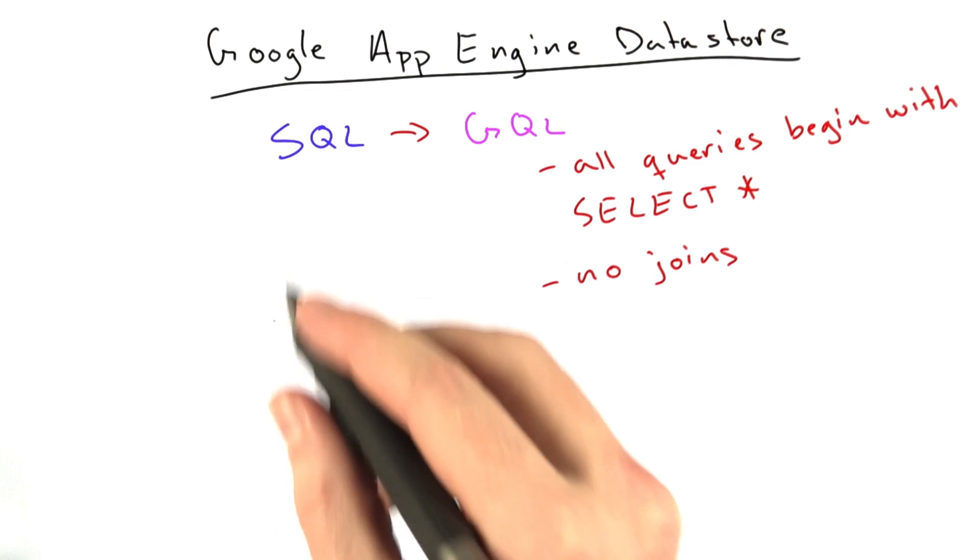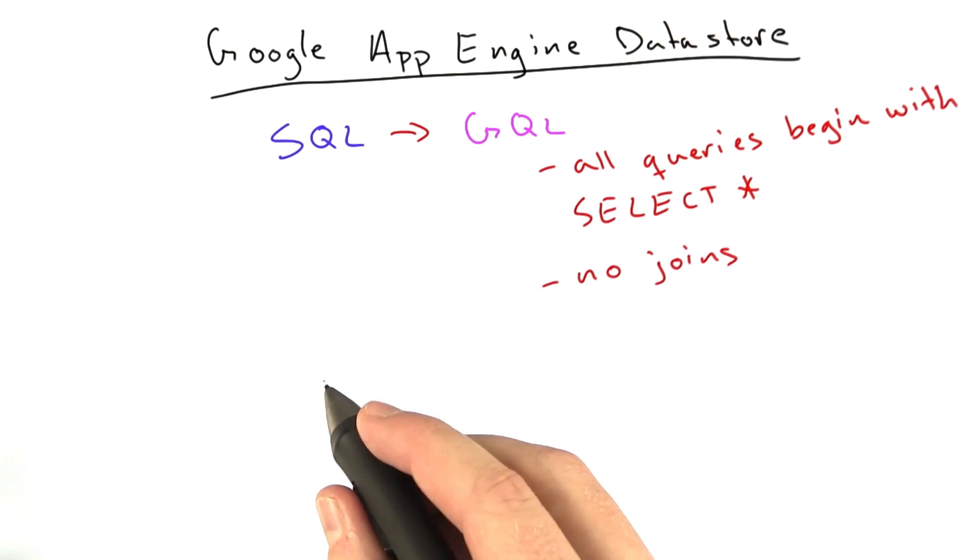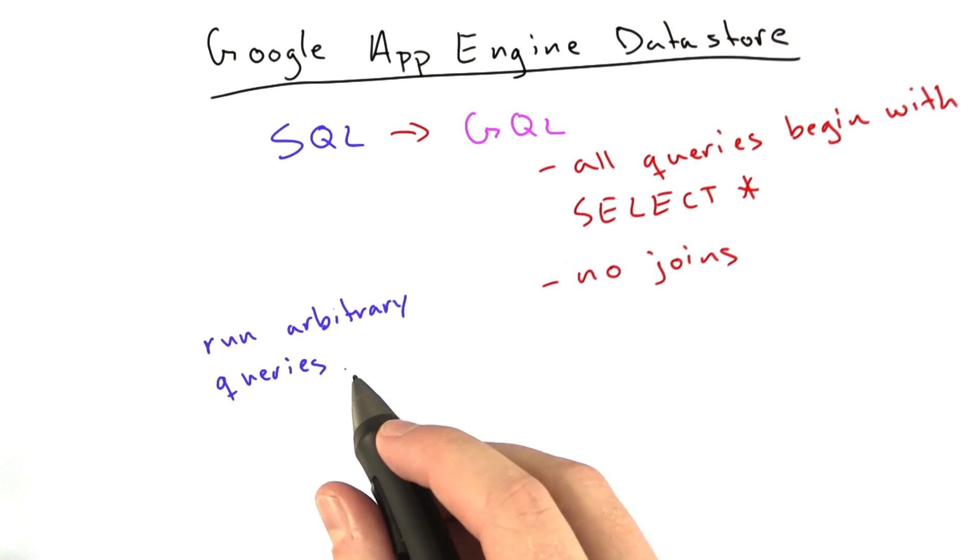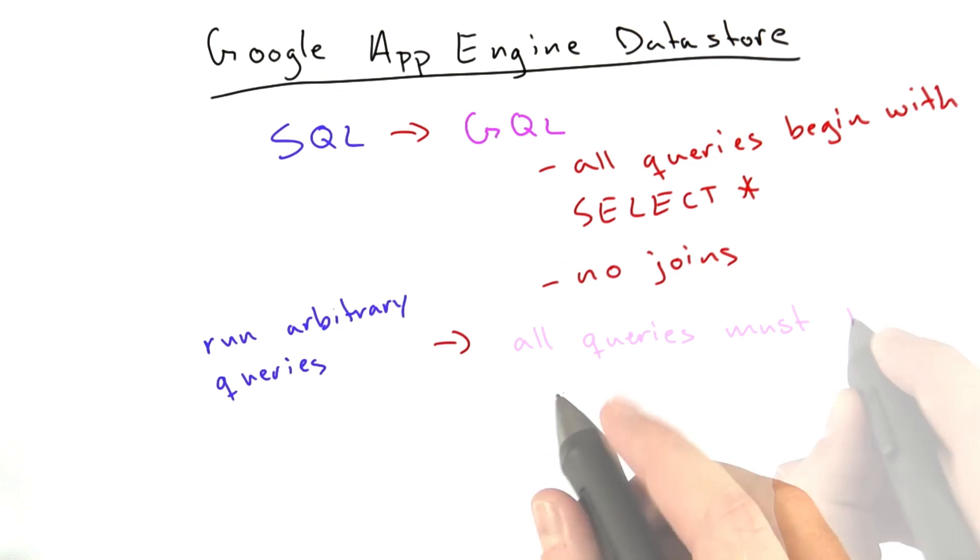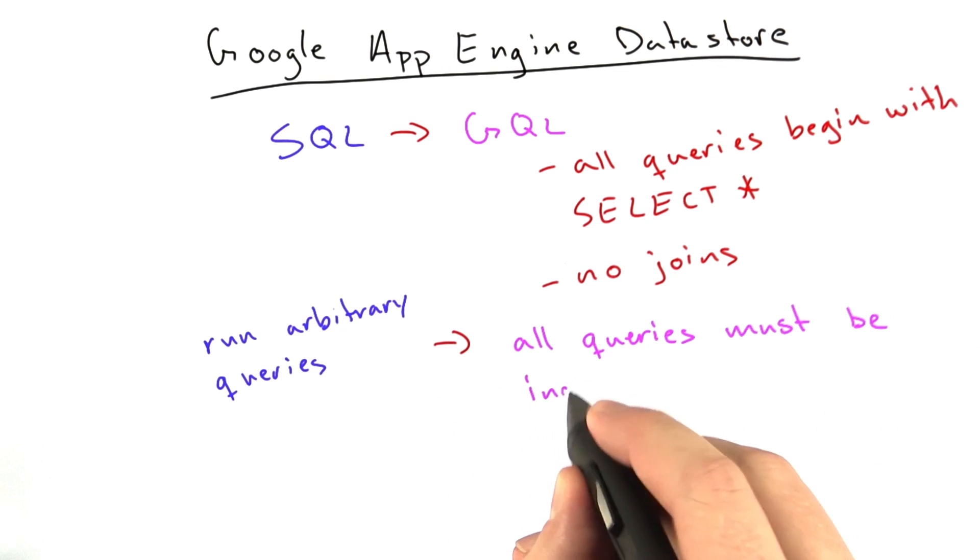Another difference is in the kind of generic SQL databases we've been talking about, you can run arbitrary queries, no matter how slow, with or without indices. And in App Engine, all queries must be indexed.